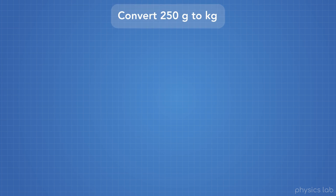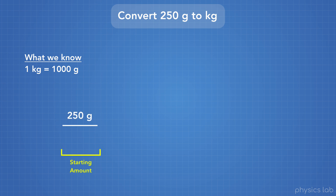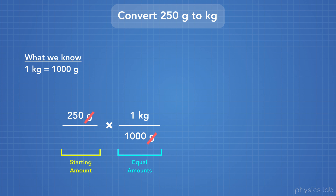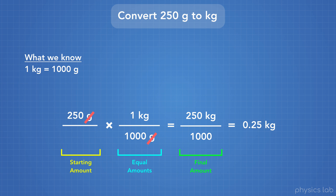Let's try an example of converting between units with prefixes. Let's convert 250 grams to kilograms. We know that one kilogram equals one thousand grams. So first, we write our starting amount, 250 grams. Next we write that relationship with grams on the bottom so that we can cancel grams. We multiply 250 times one kilogram to get 250 kilograms on top, and 1,000 on the bottom. 250 divided by 1,000 equals 0.25. So 250 grams equals 0.25 kilograms.